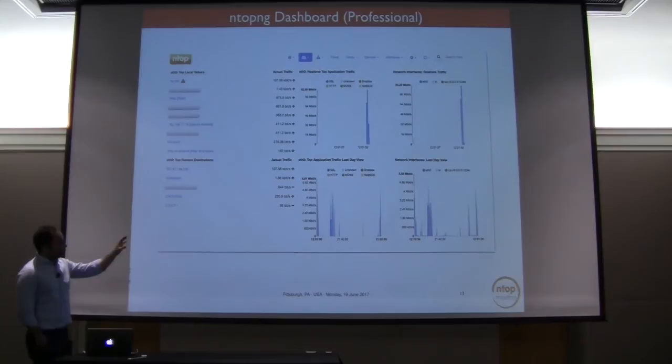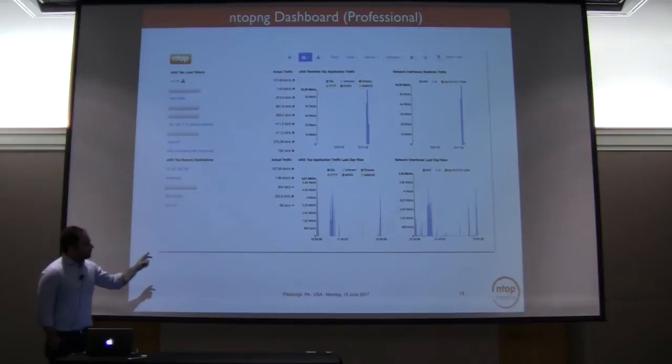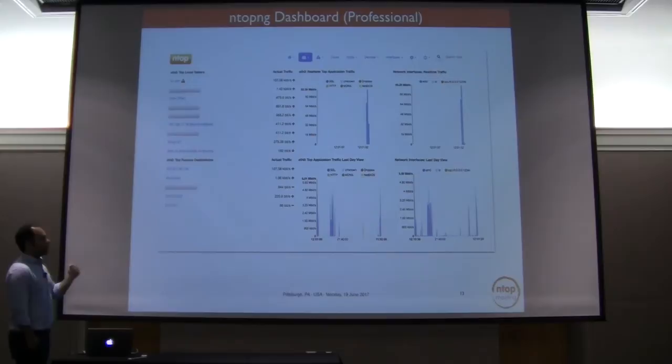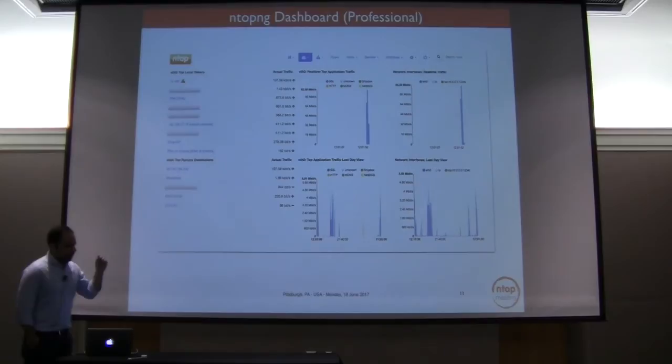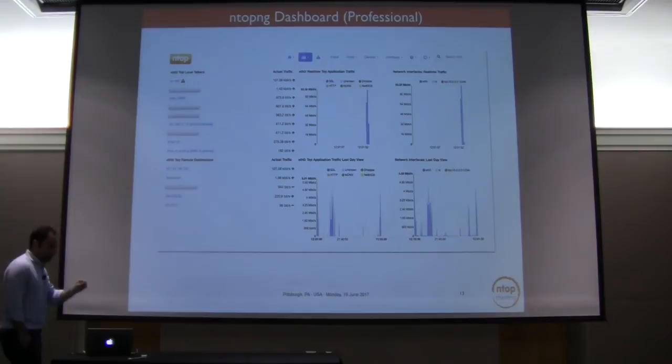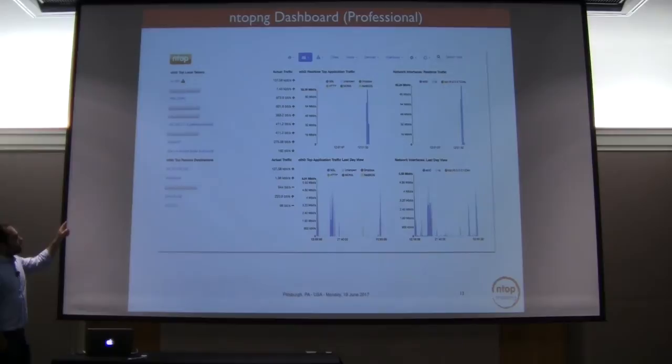At the bottom of the page we give users information on what happened during the past day — the same application traffic and network traffic, but not in real time, for the past day. In the left part of the dashboard we give information not on the kind of traffic but on the talkers: who are the top talkers currently generating or receiving traffic in the network? You get that list on the right side of the dashboard.